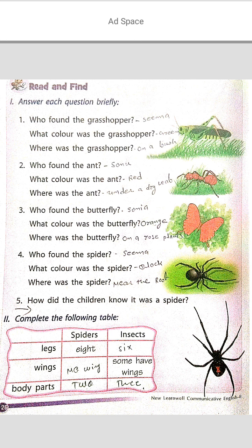First, answer each question briefly — we want to give short answers. First question: who found the grasshopper? Sima found the grasshopper. What color was the grasshopper? Green color. Where was the grasshopper? On a bush. Please pause the video and complete these three question answers: Sima, green, and on a bush.